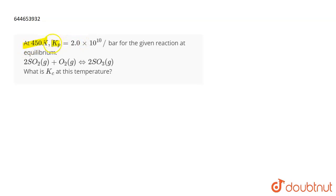The question is: at 450 Kelvin, Kp equals 2×10^10 bar inverse (or per bar) for the given reaction at equilibrium. The reaction is 2SO2(g) + O2(g) ⇌ 2SO3(g). You have to find Kc at this temperature.